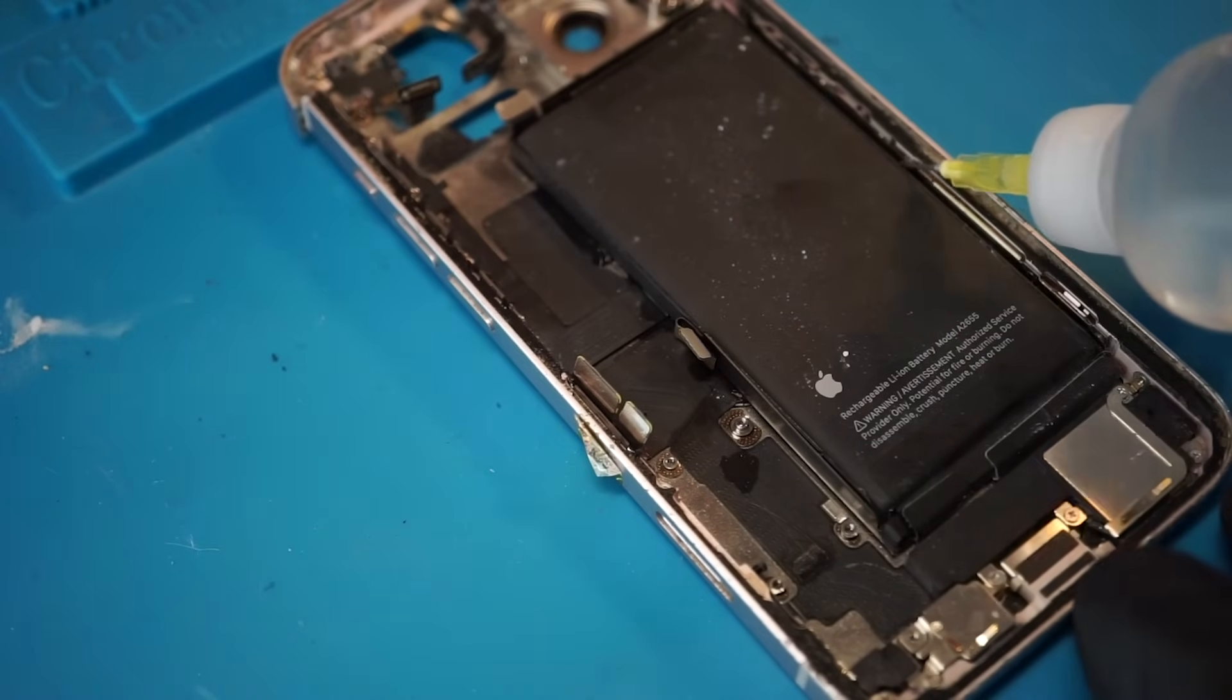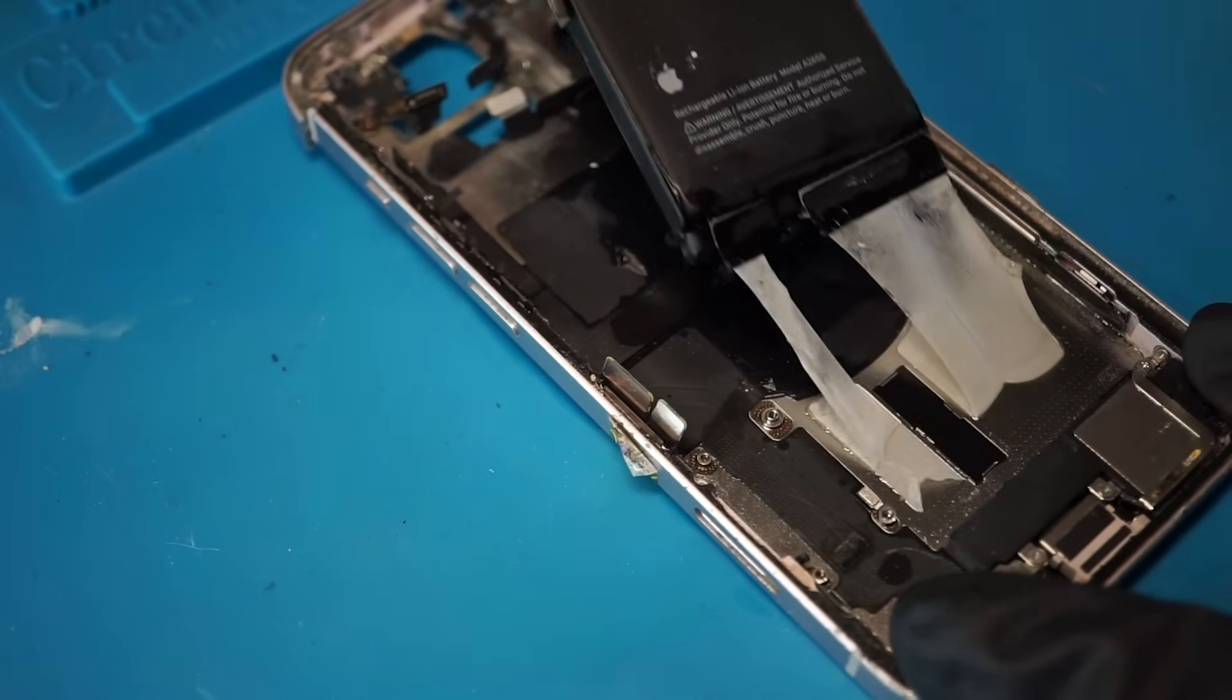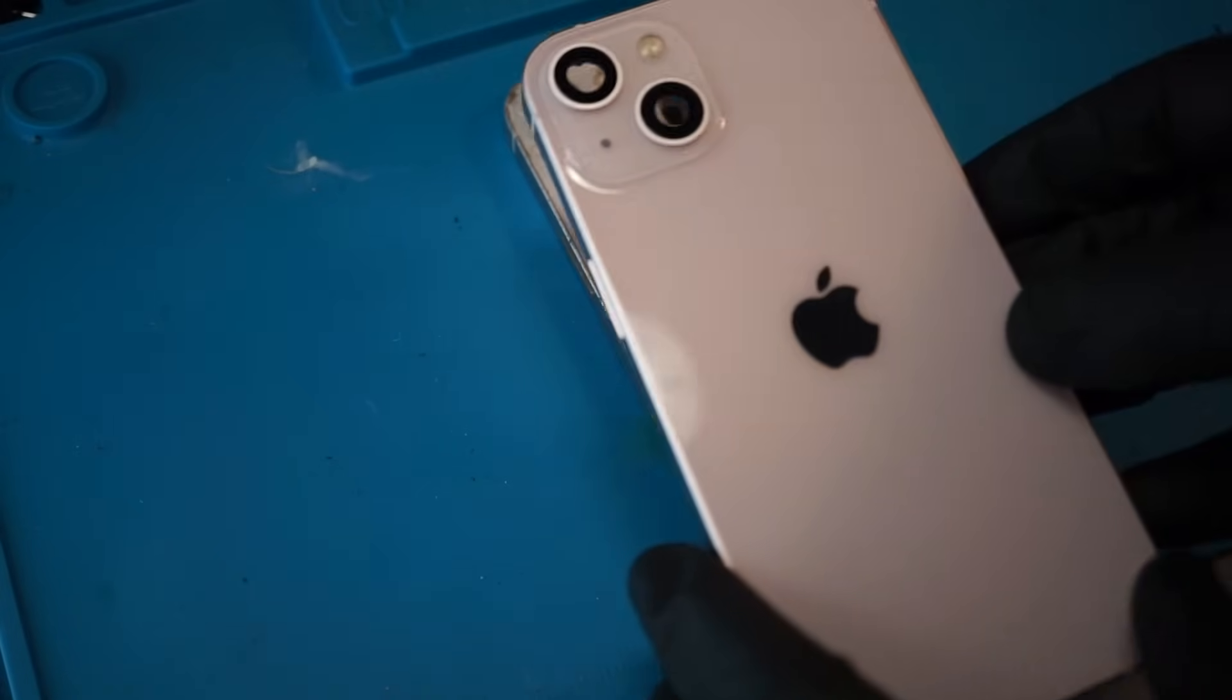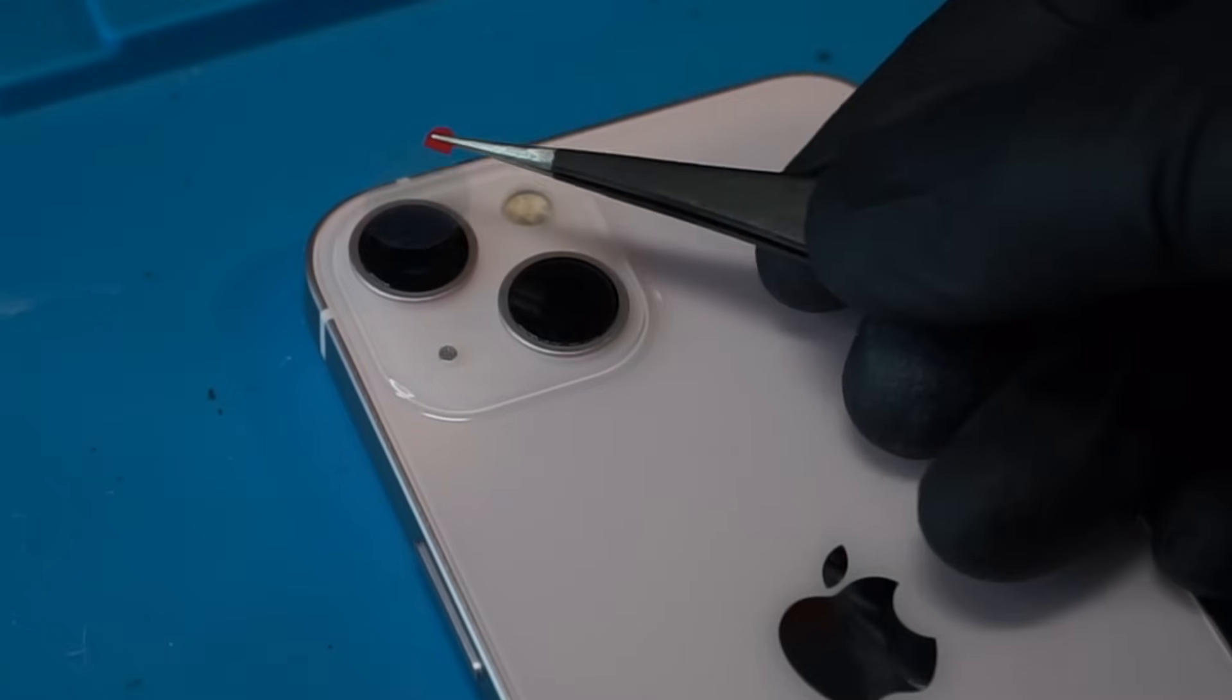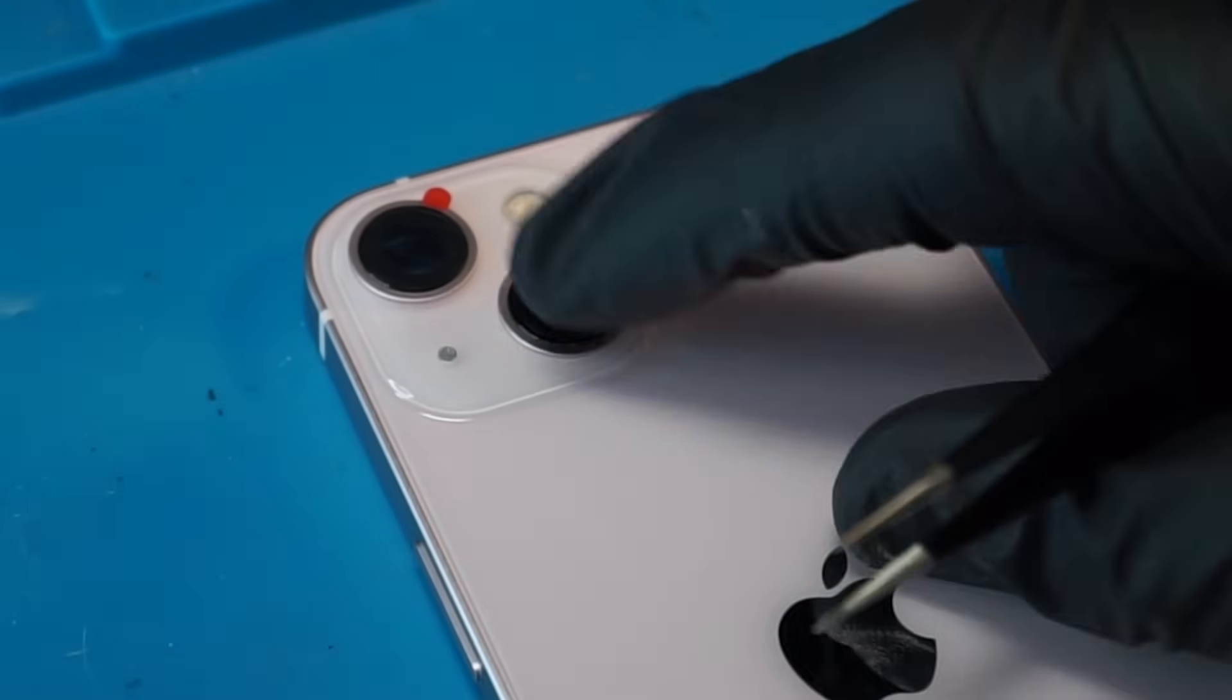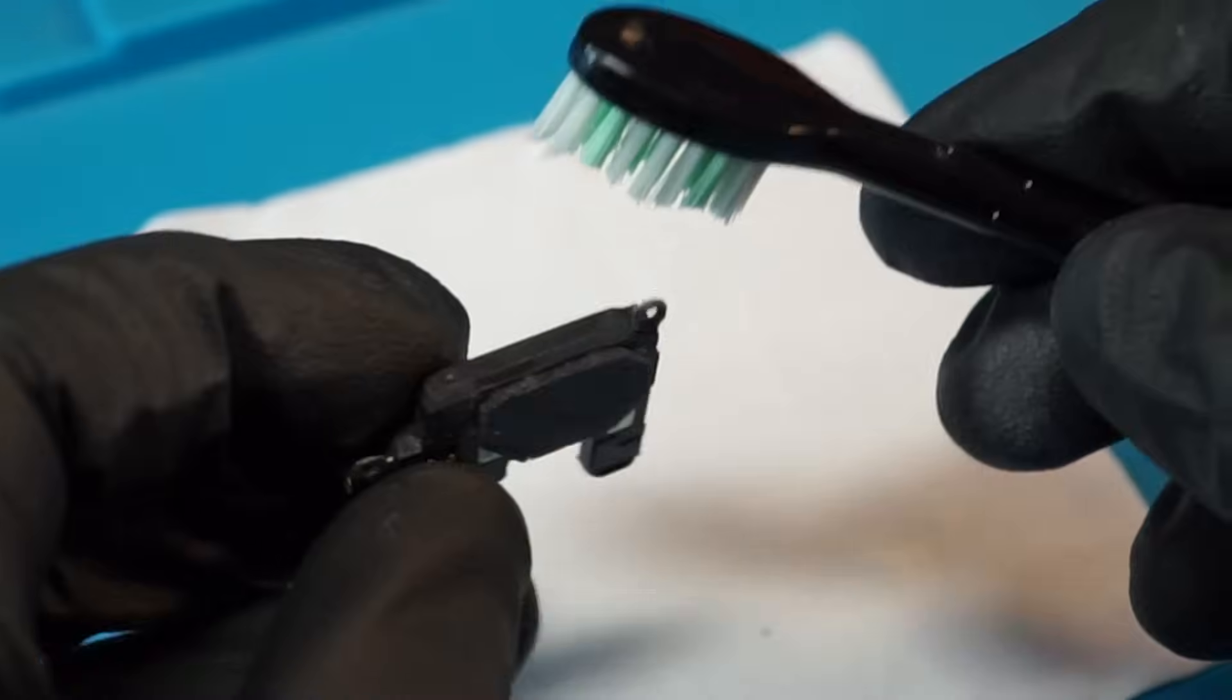Now we can finally remove the battery. A bit of alcohol and this battery will come straight out. Now we need to swap the main components back into this new housing. This housing comes with most of the small components needed. First, let's protect the camera lenses from anything that might scratch it from my bench. I want this repair to be as professional as possible, so I clean every component before putting it back inside the phone.